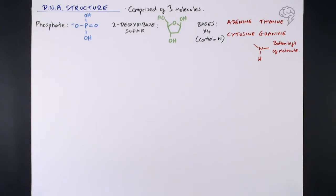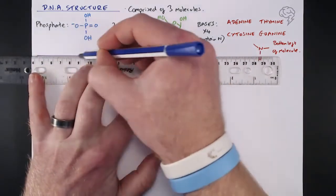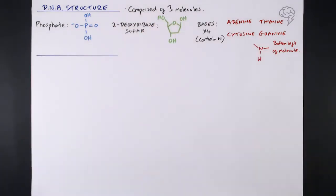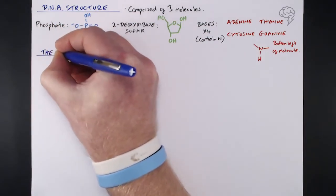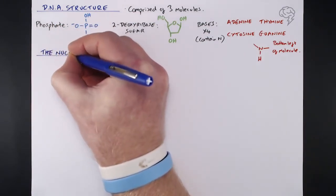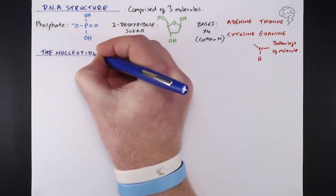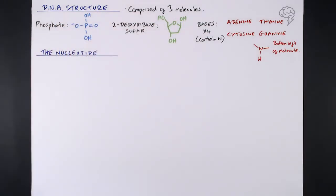So we've got three main molecules: a phosphate, a sugar, and a base. They come together to form a building block of DNA, known as a nucleotide. A nucleotide contains one phosphate, one sugar, and one base, and they fit together like so.